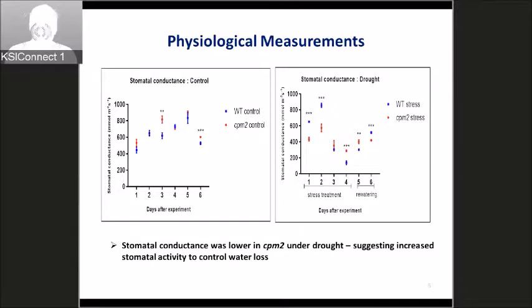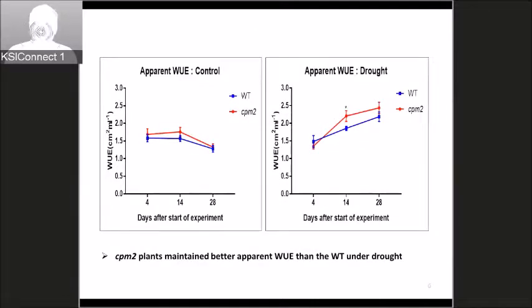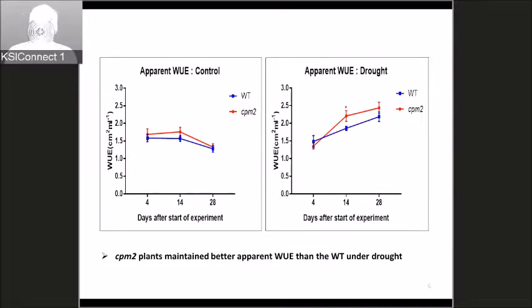We further decided to compare water use efficiency. Under control conditions there was no significant difference between the two genotypes; however, under drought, CPM2 had higher water use efficiency as compared to the wild type, and overall water use efficiency increased in both genotypes.